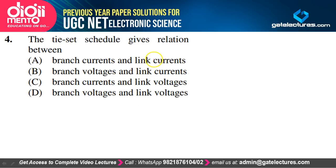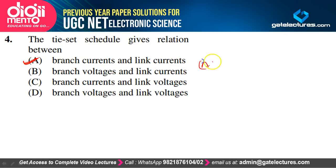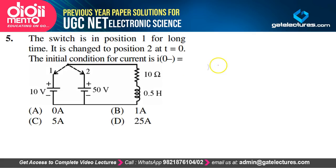The tie set schedule gives the relation between branch currents and link currents in graph theory. So option A is the correct answer.